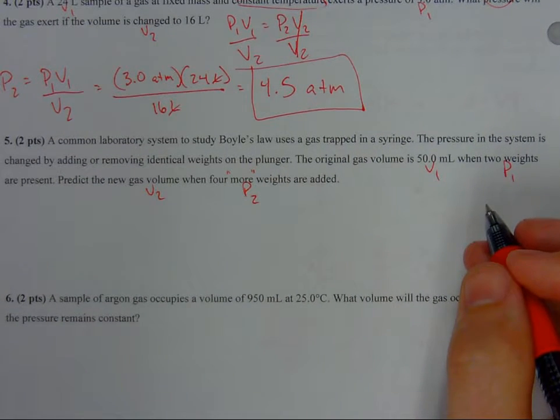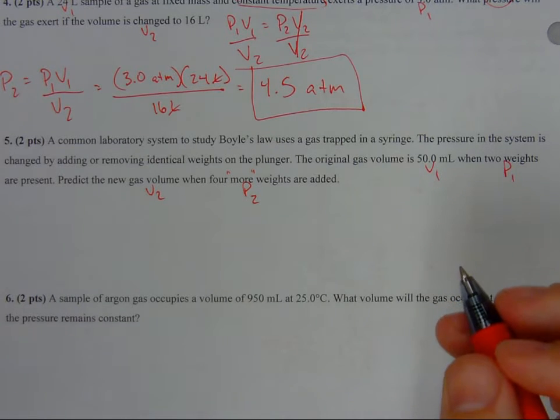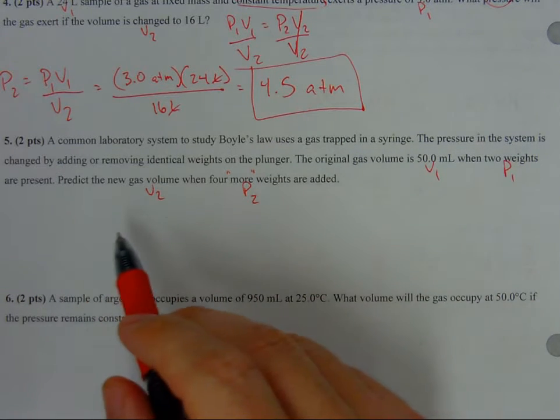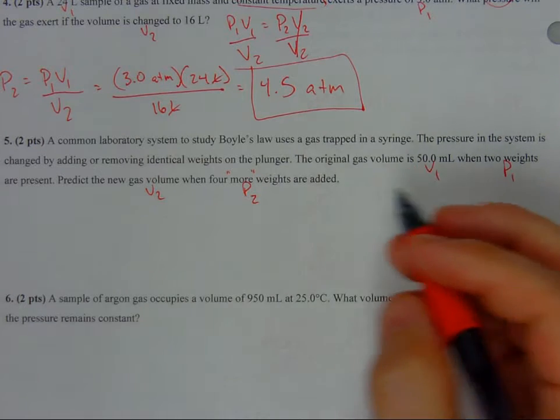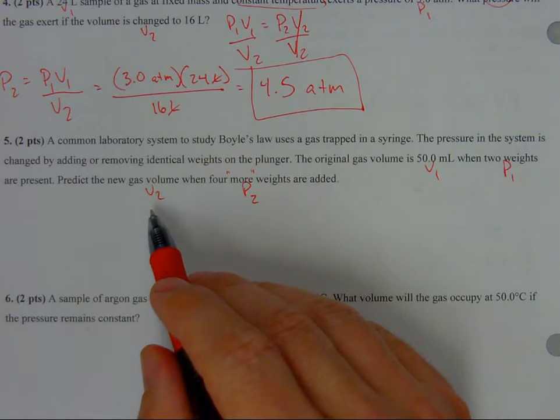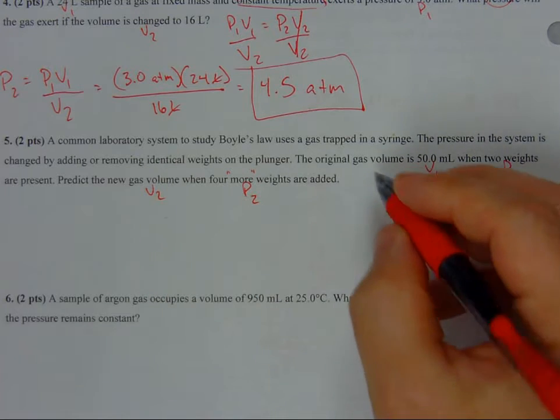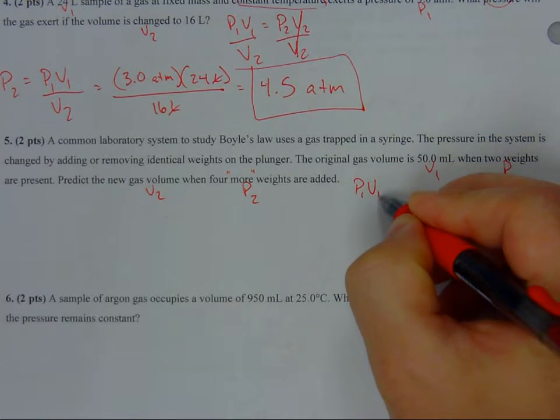But we do have four values. We can use Boyle's law, so let's give it a shot. Now we're solving for V2, so let's figure out how to solve for that.